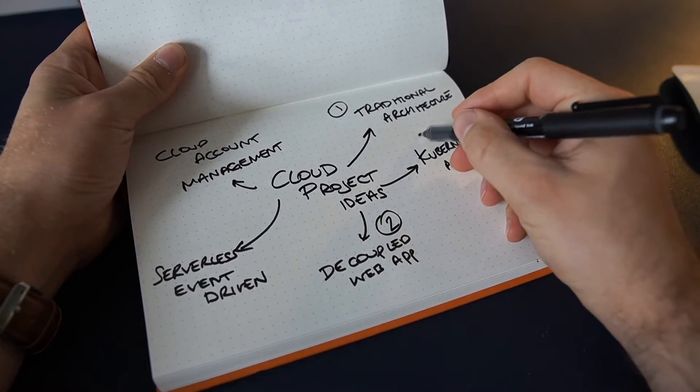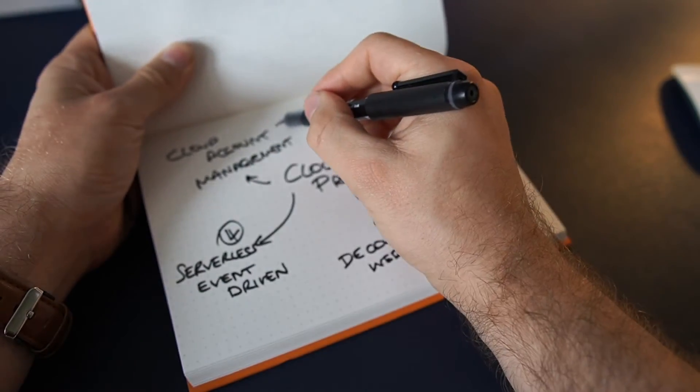So there you have it — five different projects to consider when you're trying to get into the cloud industry. These projects are going to be tough, so stick with them and think about how you can build in additional complexity. If you're a cloud engineer, focus more on the traditional architecture and the multiple AWS account infrastructure. If you're leaning toward the developer side, maybe the front-end/back-end architecture with a specialism in either front-end or back-end. I hope that gave you some real-world examples of things you can build, and I'll see you in the next one.